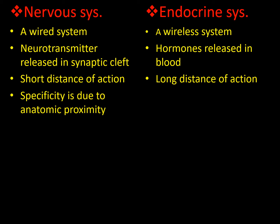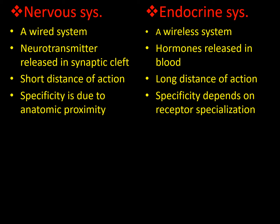In the nervous system, specificity is due to anatomic proximity — one neuron is in close approximation to the other for impulse transmission. In the endocrine system, specificity depends on receptor specialization: each hormone has its own specific receptor. For example, the insulin receptor will receive only insulin, not any other hormone.